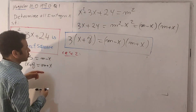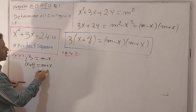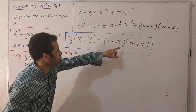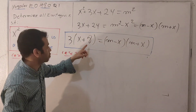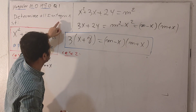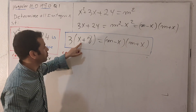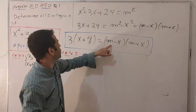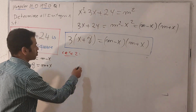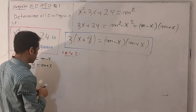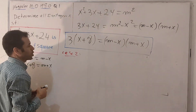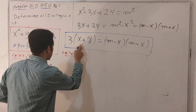For case number two, the 3 can instead multiply (m plus x). We cannot say one term is smaller or larger than the other because x is an integer — it can be positive or negative, and m can also be positive or negative. So we have to write down all the possibilities.